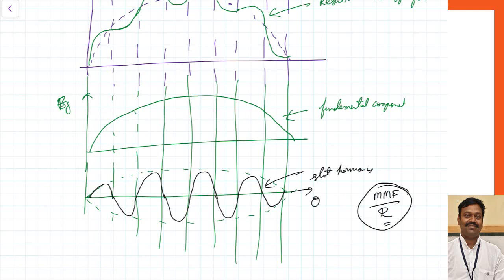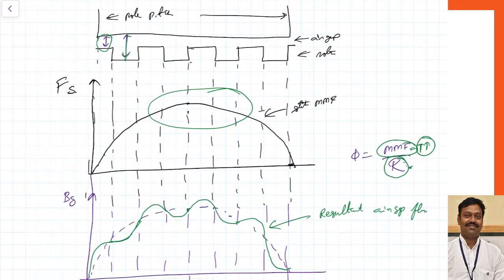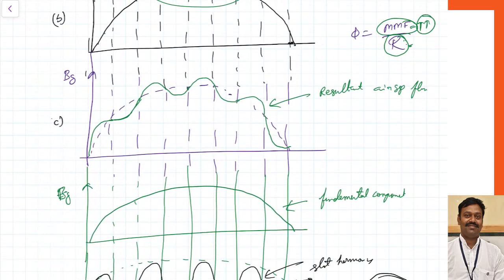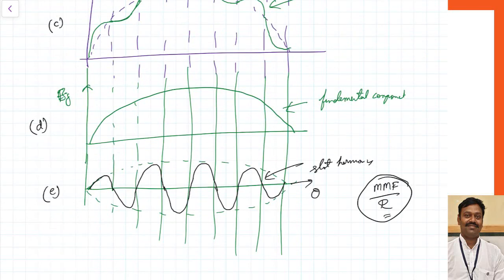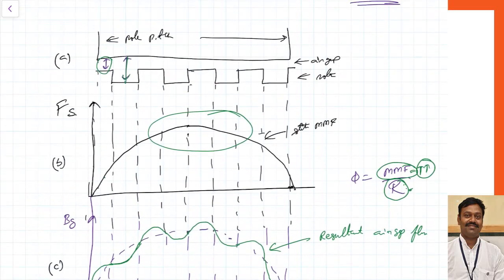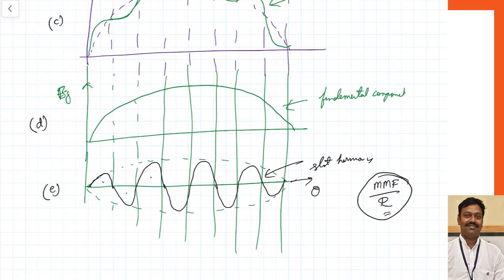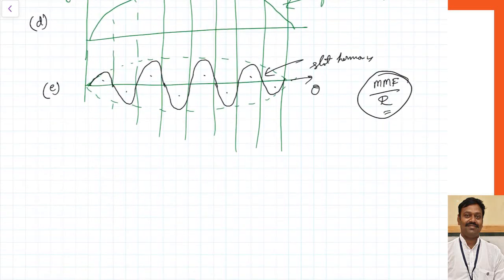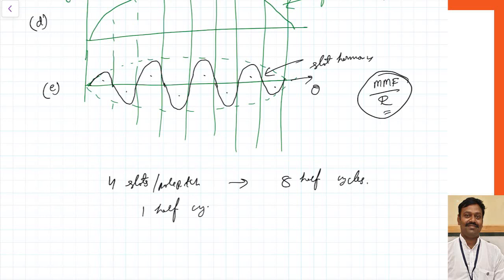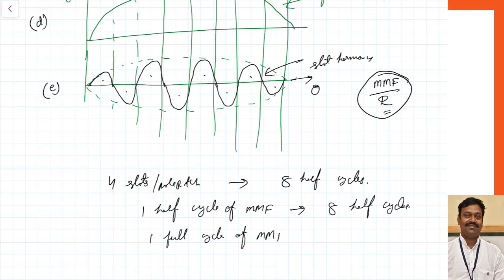Let us number these diagrams A, B, C, D, and E for easy analysis. You can observe there are 4 slots in one pole pitch. Counting the half cycles of the harmonic wave: 1, 2, 3, 4, 5, 6, 7, 8 — so when there are 4 slots per pole pitch, you get 8 half cycles. In one full cycle of your original MMF wave, you are getting 8 full cycles of your harmonic frequency.